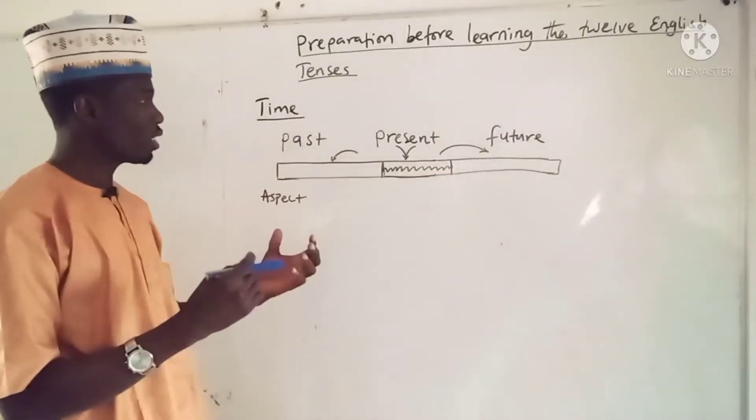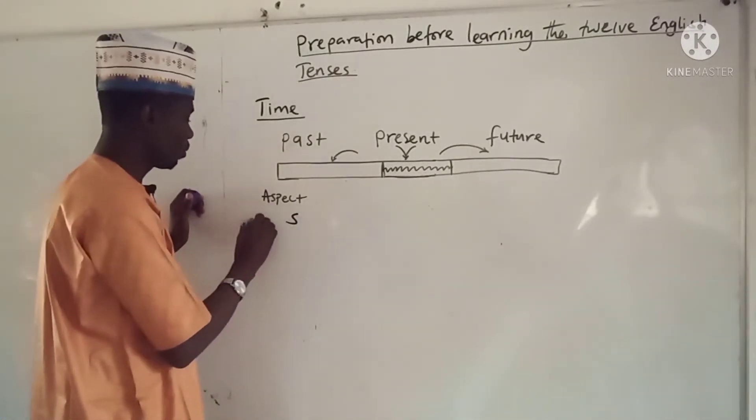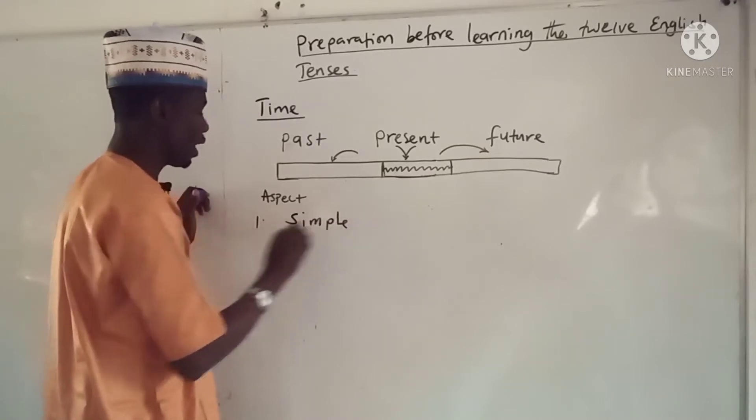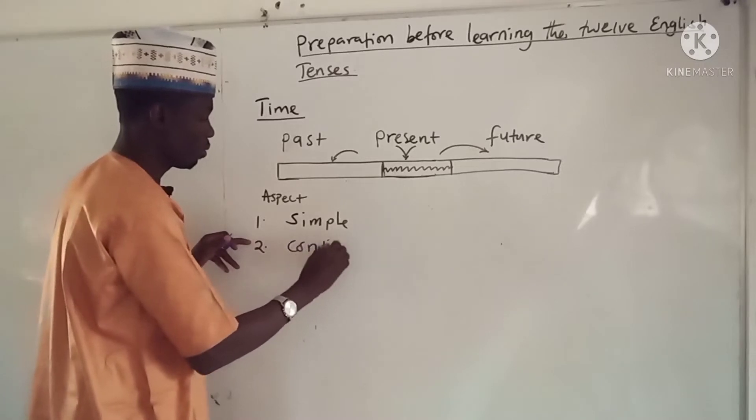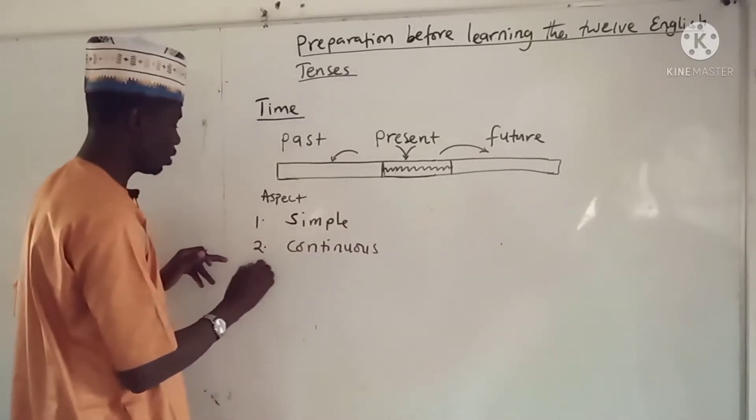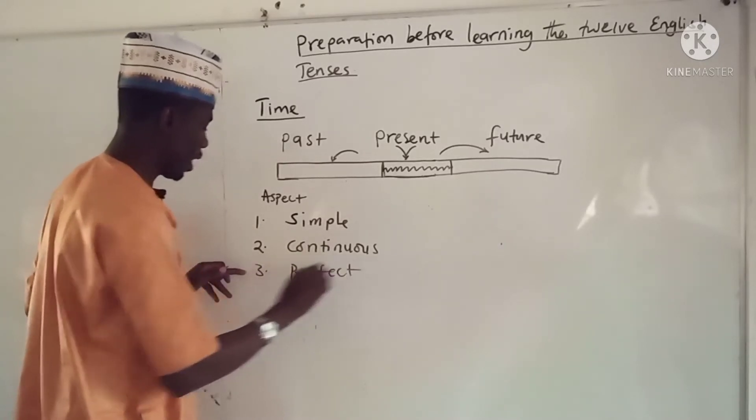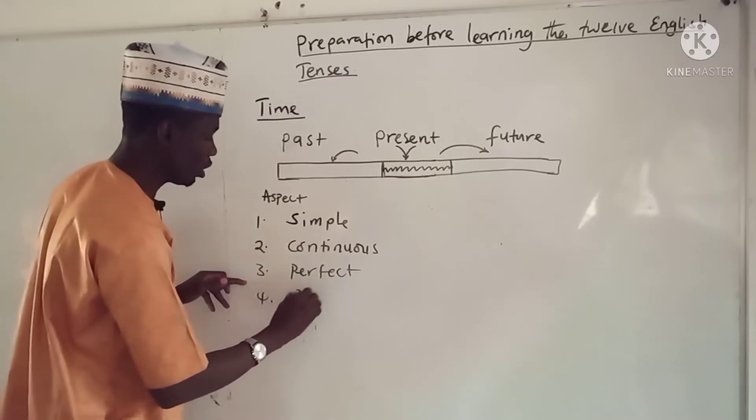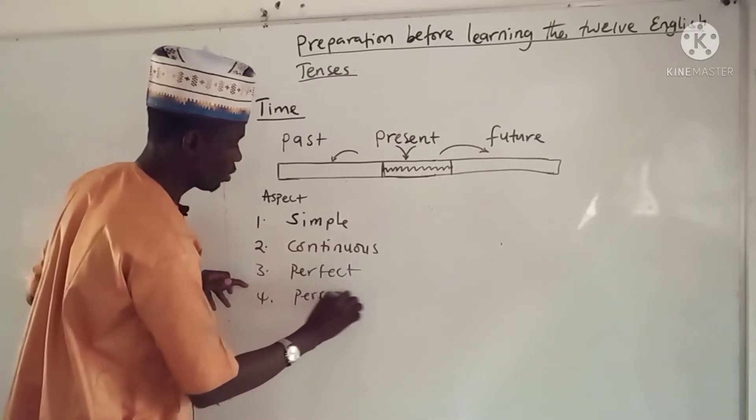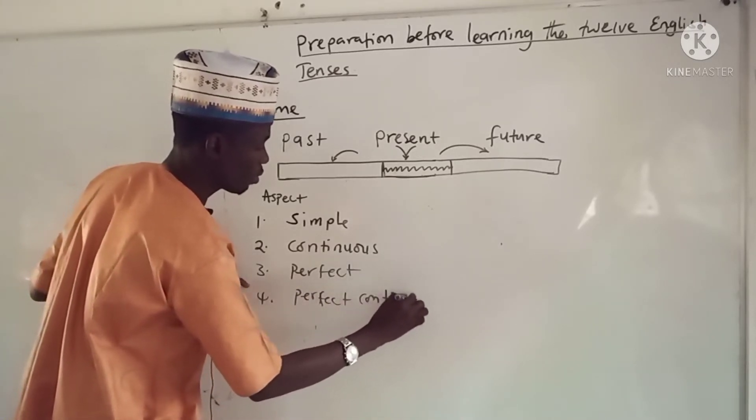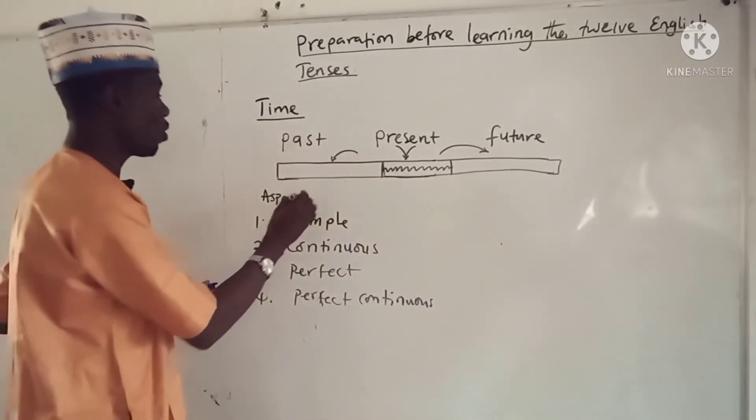So we have aspects, and aspects are divided into four. Now we have the first one which is simple. And then we have the second one which is the continuous. And then we have the third one which is the perfect. And then we have the fourth one which is the perfect continuous. So these are the four aspects.